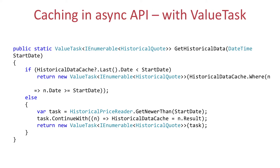ValueTask addresses exactly this problem. Here is the equivalent code with C# 7 and ValueTask. ValueTask is a new type that has a GetAwaiter method, so you can call this method with the await keyword. ValueTask was specifically designed to address the allocation issue — it's basically a discriminated union: it's either a Task or the result itself, which you can return without allocating a task on the heap. When the data is already in the cache, we return synchronously as before, but this time we don't allocate a task on the heap because ValueTask is a struct.